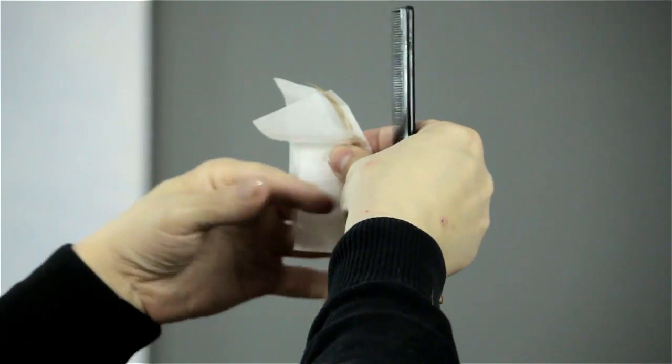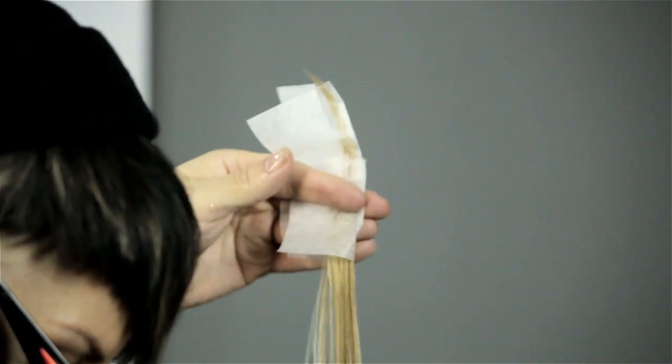Perm papers are made a certain way. They are very fine, very thin, kind of like rice paper, that the moisture and the chemical and water and everything can actually pass through it.